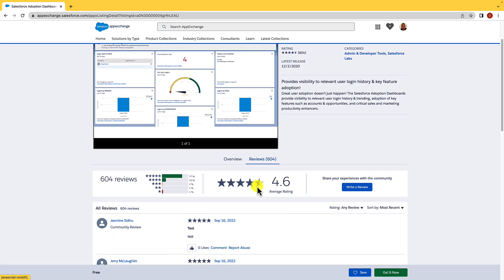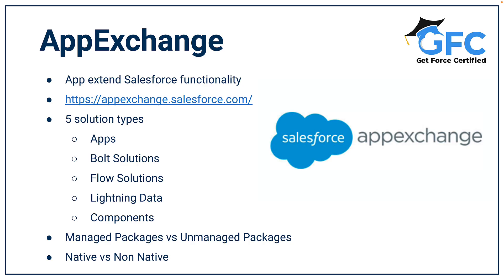A golden rule to always follow is to never download a package straight into production — always install it into a sandbox first. When it comes to packages, there are two types: managed packages and unmanaged packages. Managed packages are created and supported by vendors, and they're usually locked and don't allow much customization. Vendors use managed packages to sell their apps and to charge subscriptions or one-off fees. It is the vendor's responsibility to upgrade and support them as Salesforce goes through its releases. Unmanaged packages are not locked and can be customized, but they're not supported or upgraded by the vendor, though you can see all of the components.